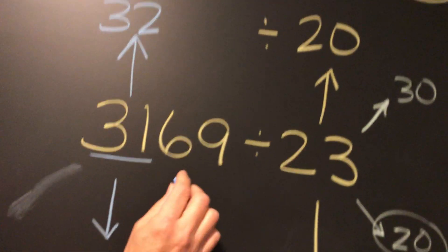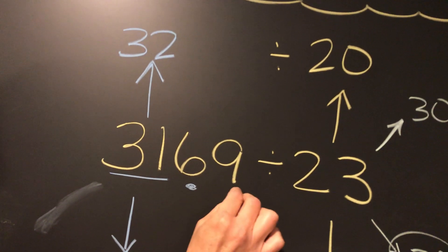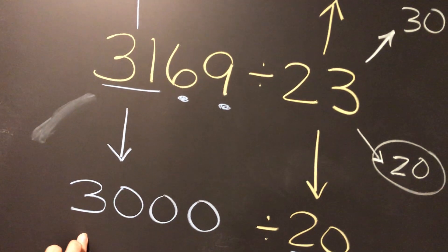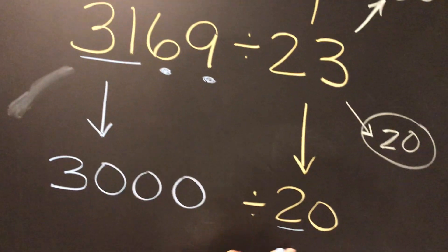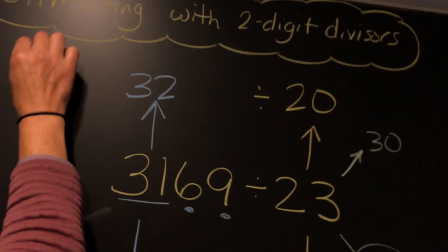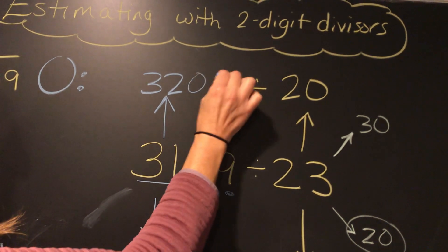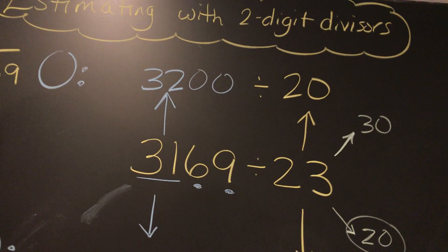Then we look at it. You've got those two digits left in your dividend, so that means we're going to put two zeros. So for our underestimate, we're going to do 3,000 divided by 20. And for our overestimate, we're going to be doing 3,200 divided by 20.